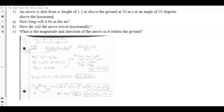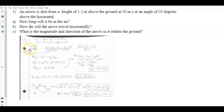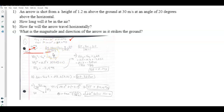I drew a sketch showing the arrow firing upward at an angle, starting above the ground. I filled in the tables for the known information: the height it falls over the entire distance is negative 1.2 meters. I used trig to find the x and y components of initial velocity — 30 sine of 20 gives y = 10.3 m/s, and 30 cosine of 20 gives x = 28.2 m/s. Gravity is negative 9.8.